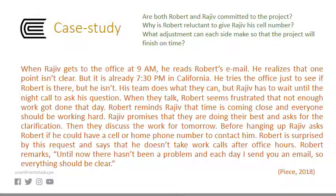His team does what they can, but Rajiv has to wait until the night call to ask his question. When they talk, Robert seems frustrated that not enough work got done that day. Robert reminds Rajiv that time is coming close and everyone should be working hard. Rajiv promises that they are doing their best and asks for the clarification. Then they discuss the work for tomorrow. Before hanging up, Rajiv asks Robert if he could have a cell or home phone number to contact him. Robert is surprised by this request and says that he doesn't take work calls after office hours. Robert remarks, 'Until now there hasn't been a problem, and each day I send you an email, so everything should be clear.'